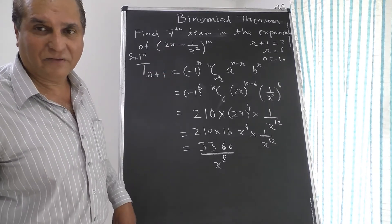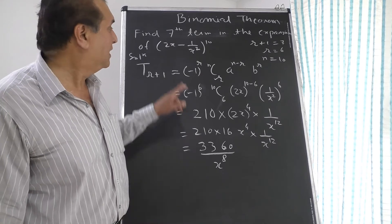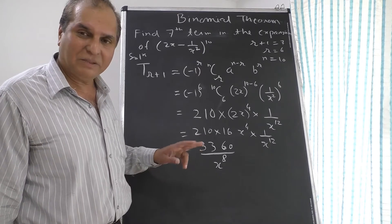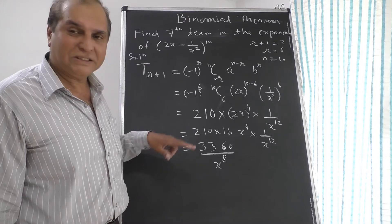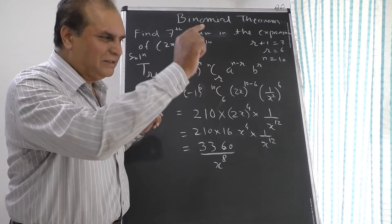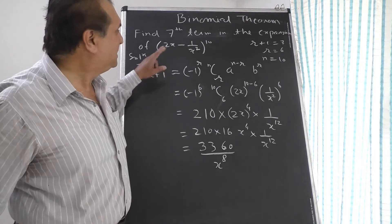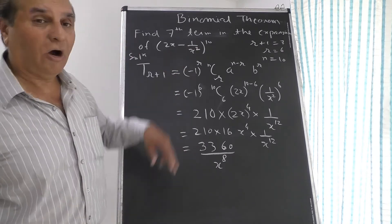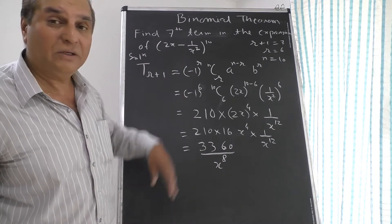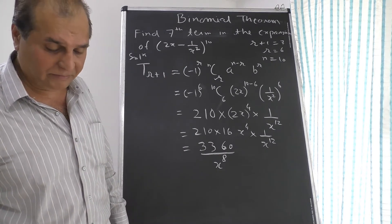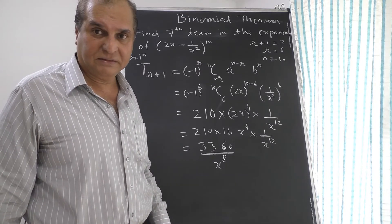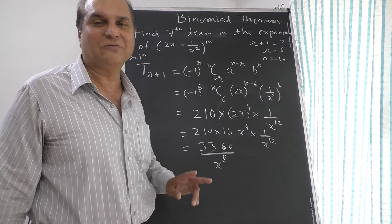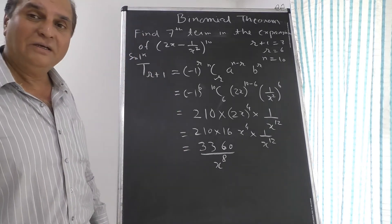They may also ask you to find the middle term instead of a specific numbered term. For (a + b)^10 there are 11 terms. Since 11 plus 1 is 12, and 12 divided by 2 is 6, the sixth term T6 is the middle term. But if the power is odd, like (a + b)^11, there are 12 terms, and 12 divided by 2 gives 6 — so both T6 and T7 are the middle terms.